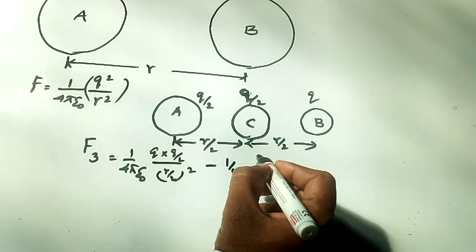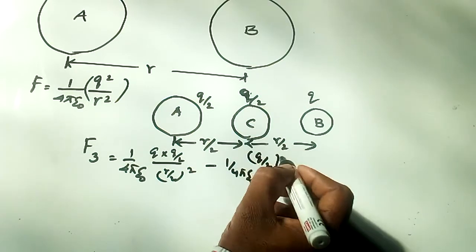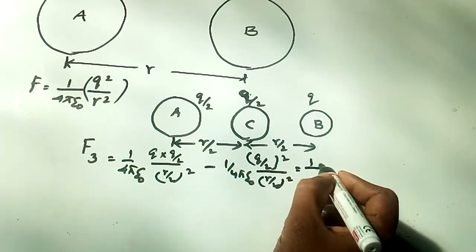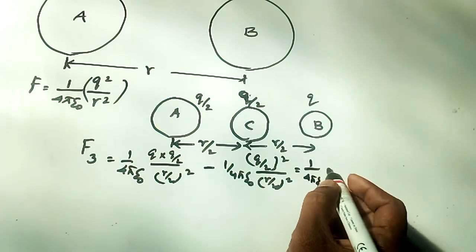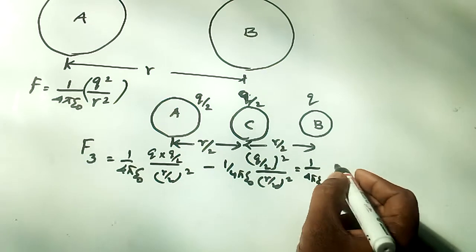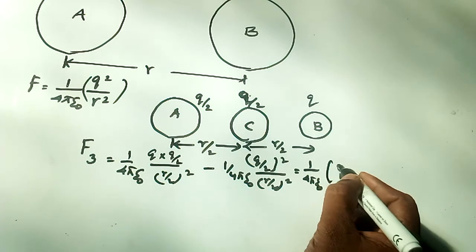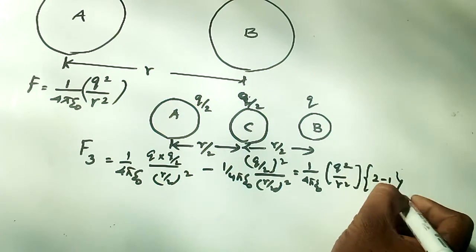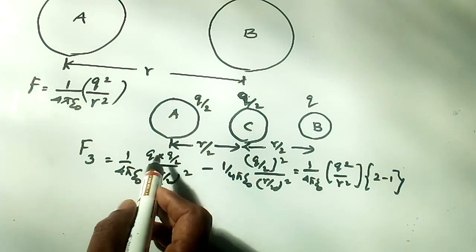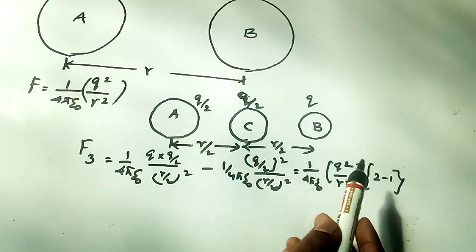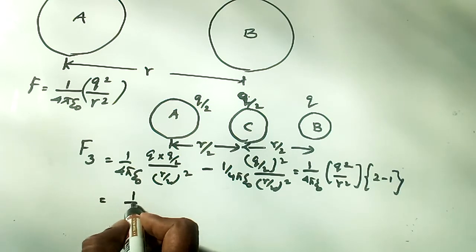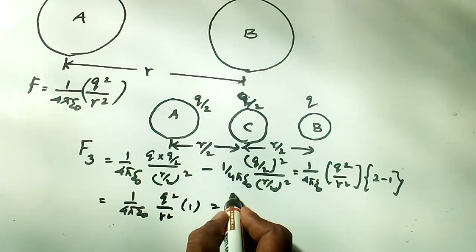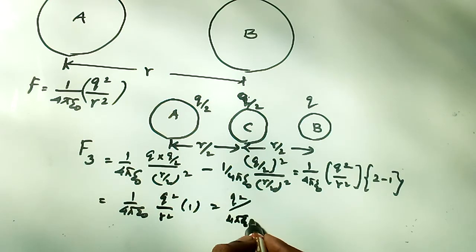Taking (1/4πε₀) as common and simplifying, we get F₃ = (1/4πε₀) × (Q²/R²) × [2 - 1] = (1/4πε₀) × Q²/R², which simplifies to Q²/(4πε₀R²).